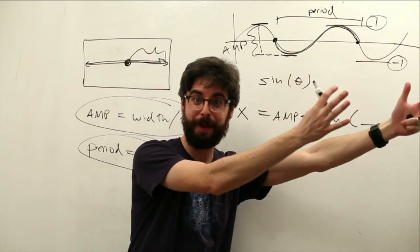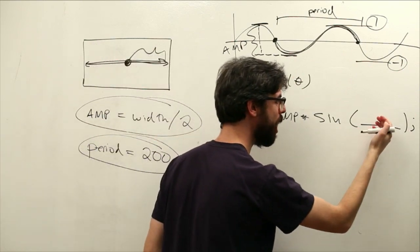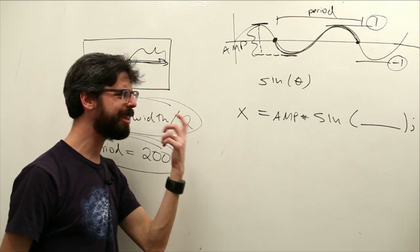If we multiply something that goes between one and negative one by width divided by two, we're going between width divided by two and negative width divided by two. So we can take the result of the sine function and multiply it by amplitude. Now how do we get the period?